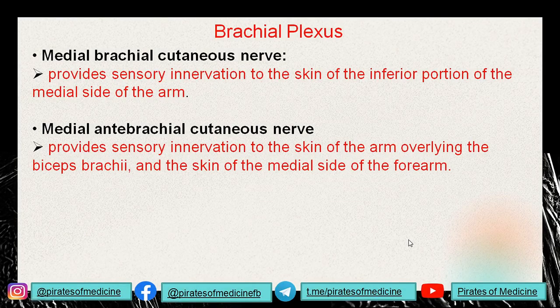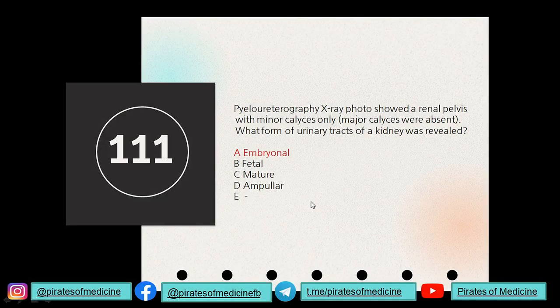Additional brachial plexus branches include the musculocutaneous nerve, median nerve, ulnar nerve, and radial nerve. The two cutaneous branches are the medial brachial and medial antebrachial cutaneous nerves. You can note down their sensory innervation areas.